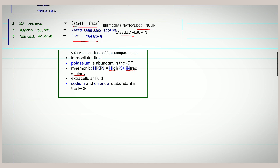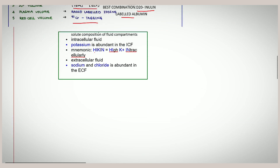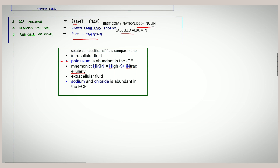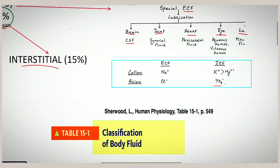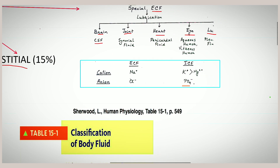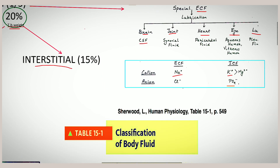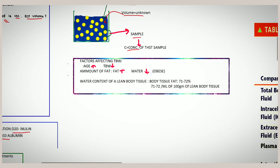Regarding solute composition: in intracellular fluid (ICF), potassium is the predominant cation — remember this with the mnemonic 'HIKING' for high potassium in ICF. In extracellular fluid (ECF), sodium and chloride are at higher concentrations. In ECF, the cation is sodium; in ICF, the cations are potassium and magnesium, with potassium more concentrated than magnesium. The anion in ECF is chloride, and in ICF it is phosphate (PO₄).